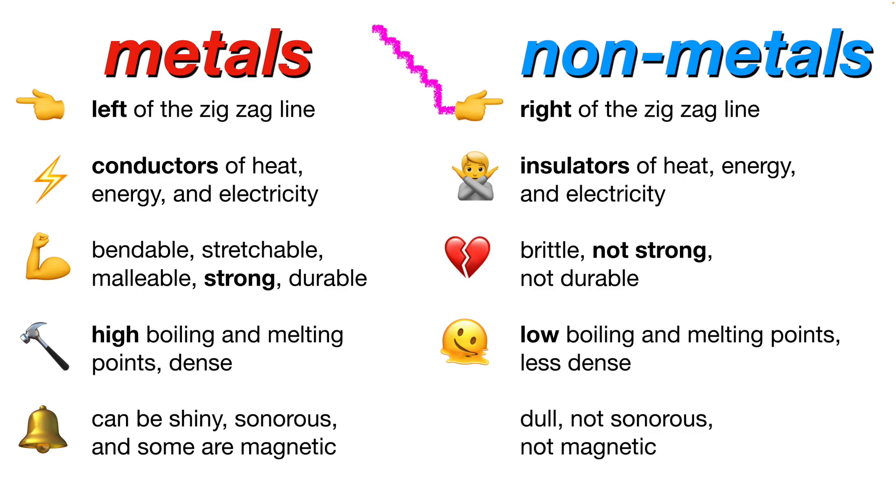Metals can become shiny. Some of them are sonorous, and some are also magnetic, whereas non-metals are dull, not sonorous, and none of them are magnetic. See you guys in the next one. Bye!